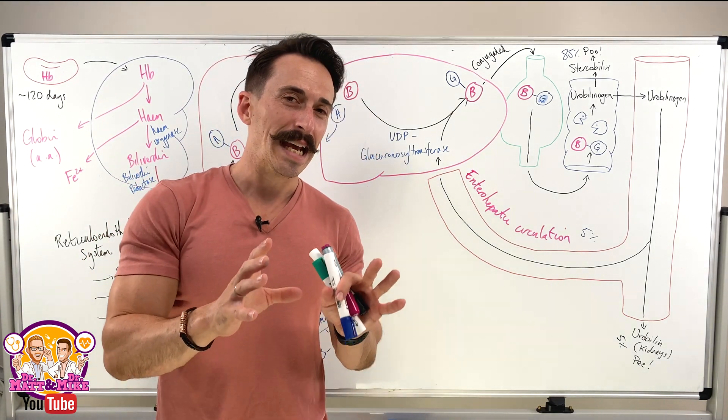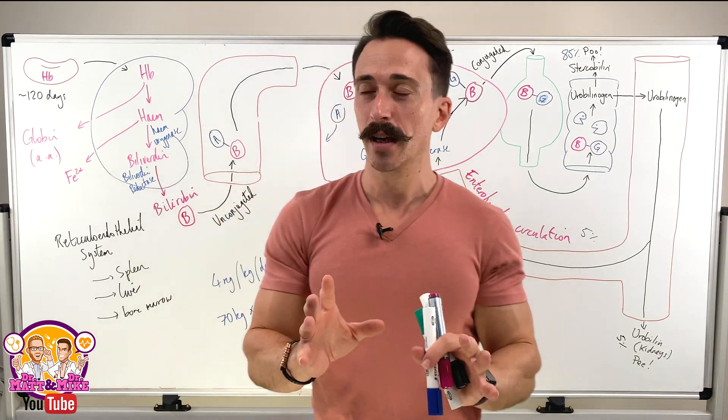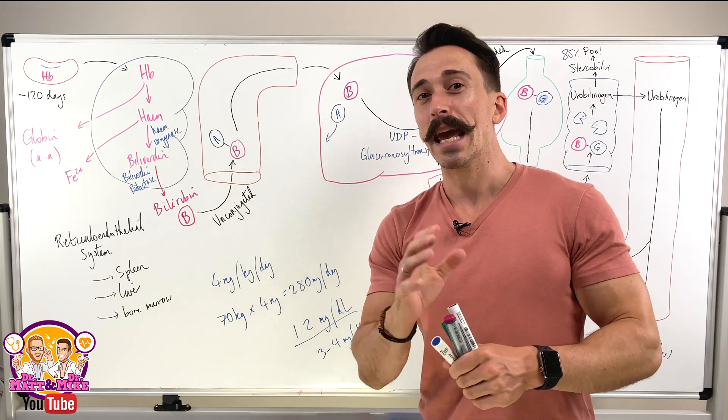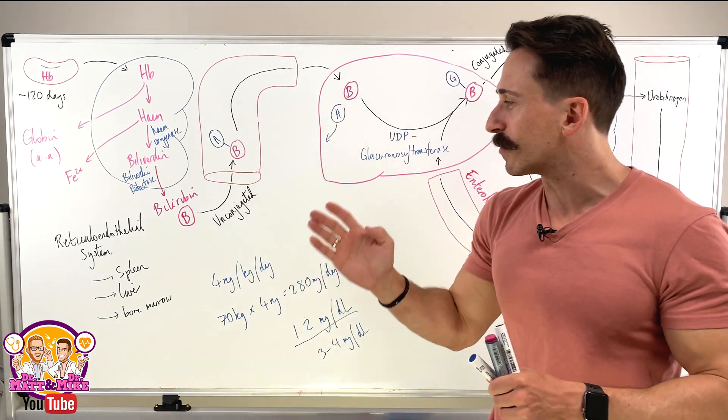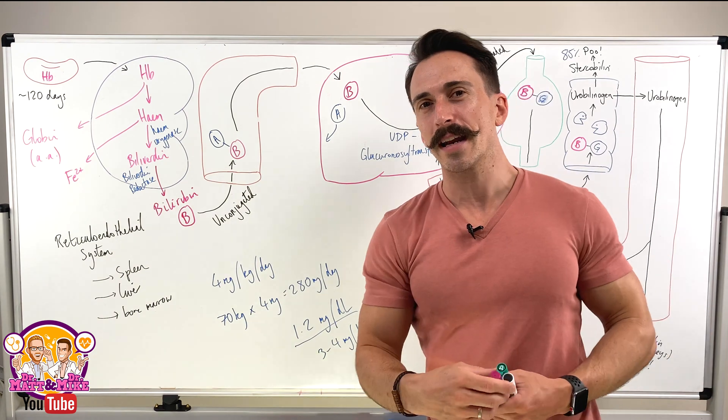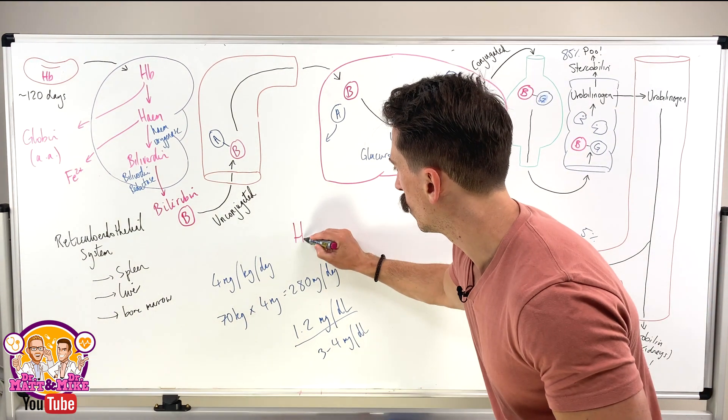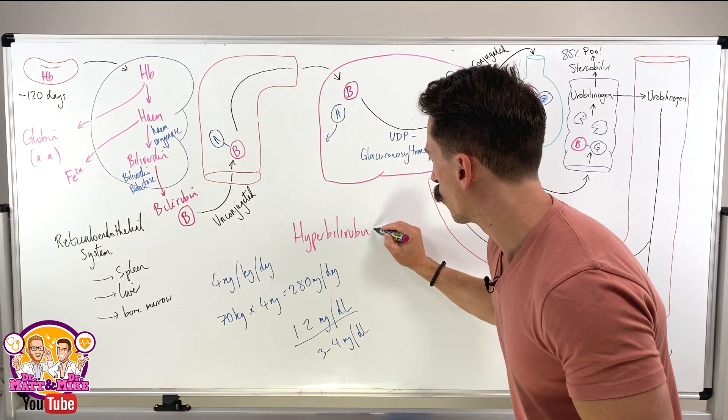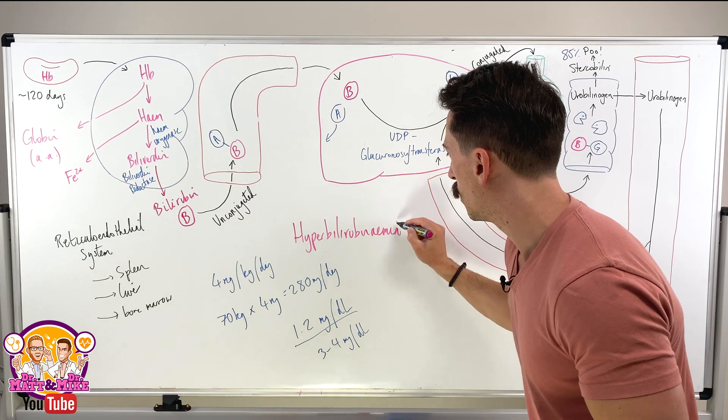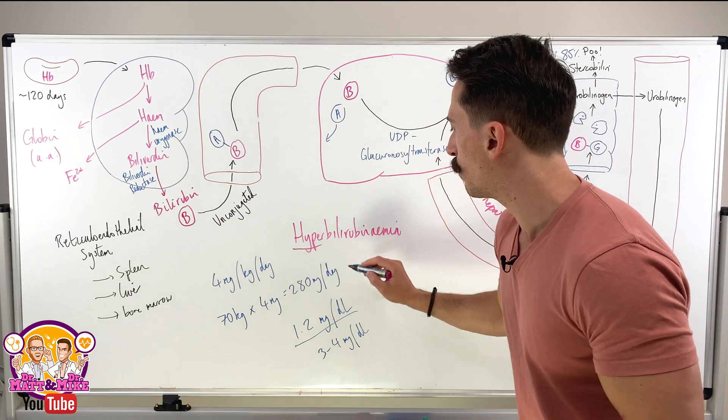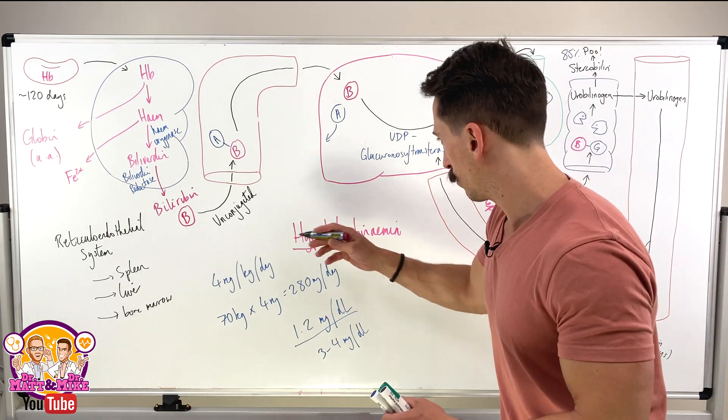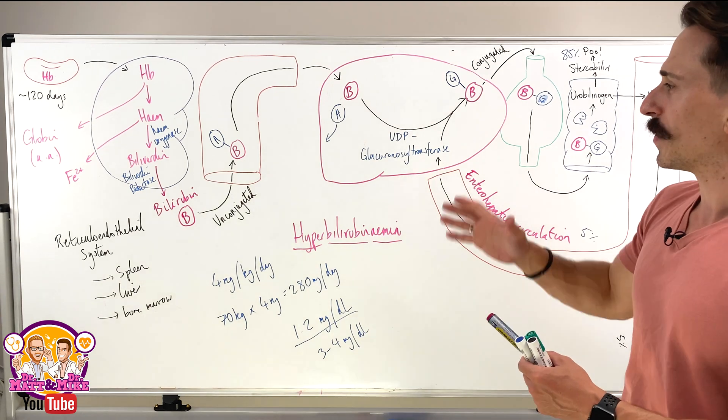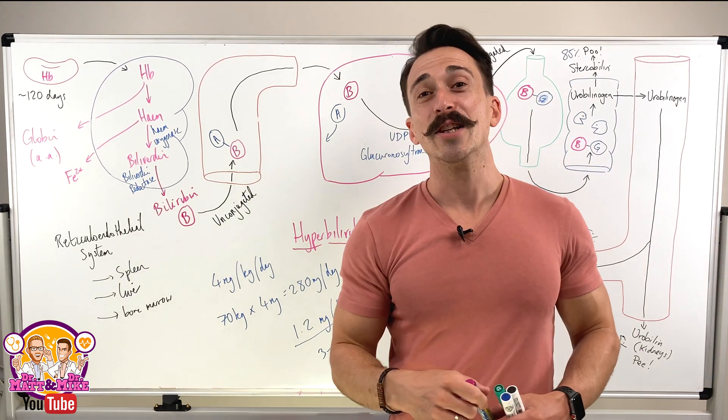Now that we've drawn this up, what we can do is that we can have a look at the causes of jaundice. Jaundice, again, is that yellow discoloration that occurs if you have elevated levels of bilirubin. If you have elevated levels of bilirubin, it is called hyperbilirubinemia. Remember, hyper means above, bilirubin is the metabolic product, and emia is referring to the blood. So, let's now take a look at jaundice.